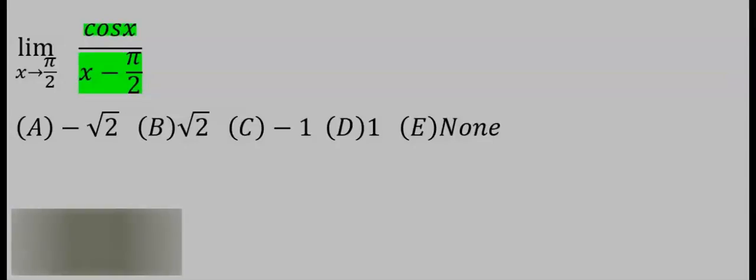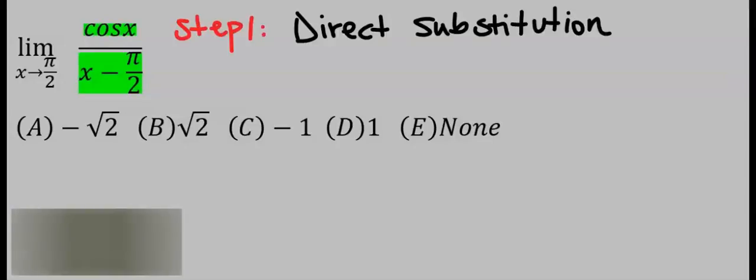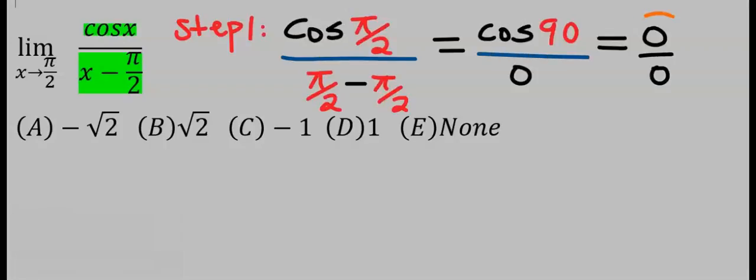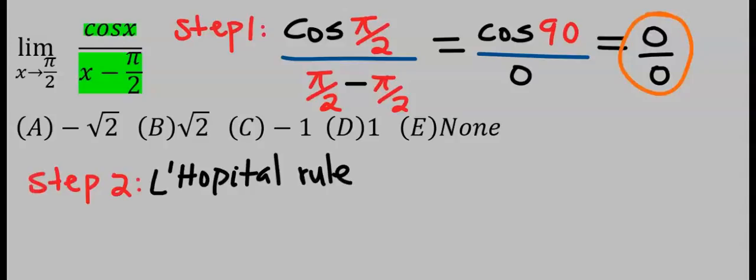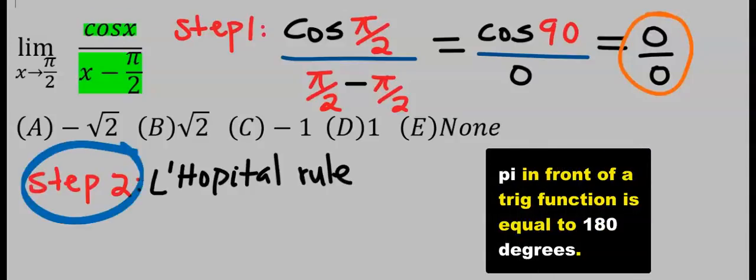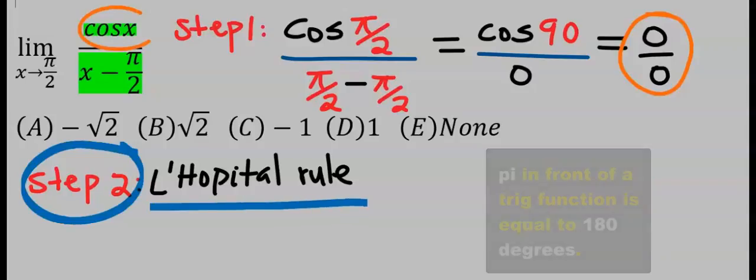Let's consider this question. Step one is by direct substitution, and by plugging in we got zero over zero. Next, step number two, we are going to apply L'Hôpital's rule. That is, we are going to differentiate each of these variables separately.